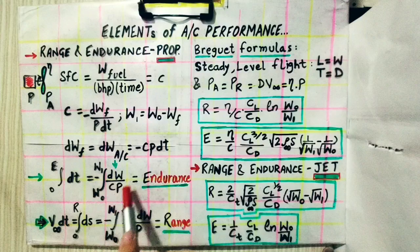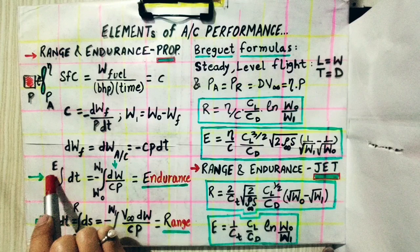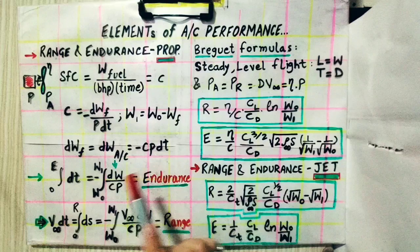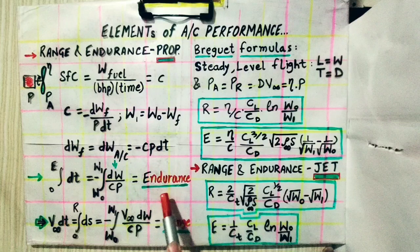From this, endurance E is the integral from time zero to time E, or equivalently from initial weight W₀ to final weight W₁. Integrating both sides with respect to their respective variables gives us the endurance formula for a piston-engine propeller-driven aircraft.